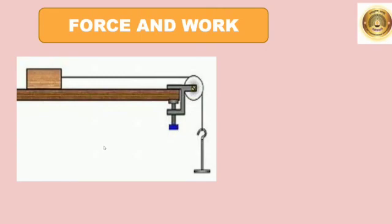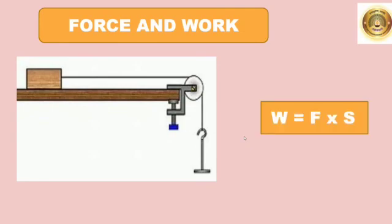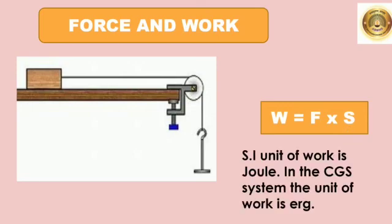We know that work done depends upon force and displacement. We can calculate the work done by force applied to the body multiplied by the displacement. That is, W is equal to F into S, where F is the force applied to the body and S is the displacement of the body. In the SI system, the unit of work is Joule, while the unit of force is Newton. And in the CGS system, the unit of work is Erg.